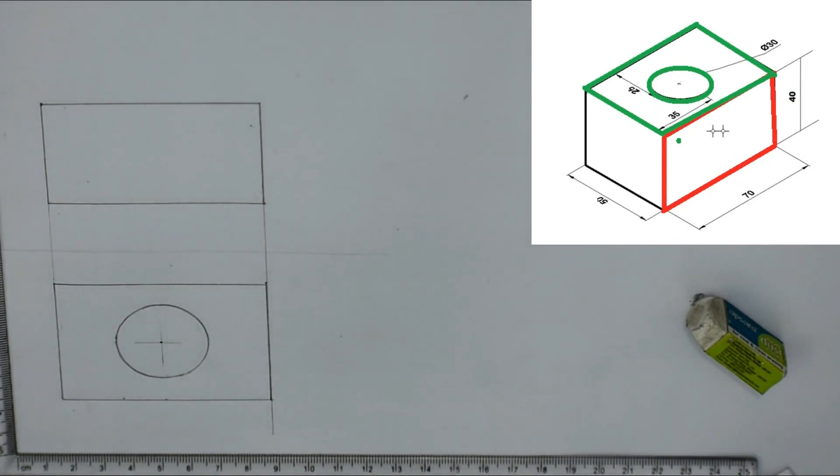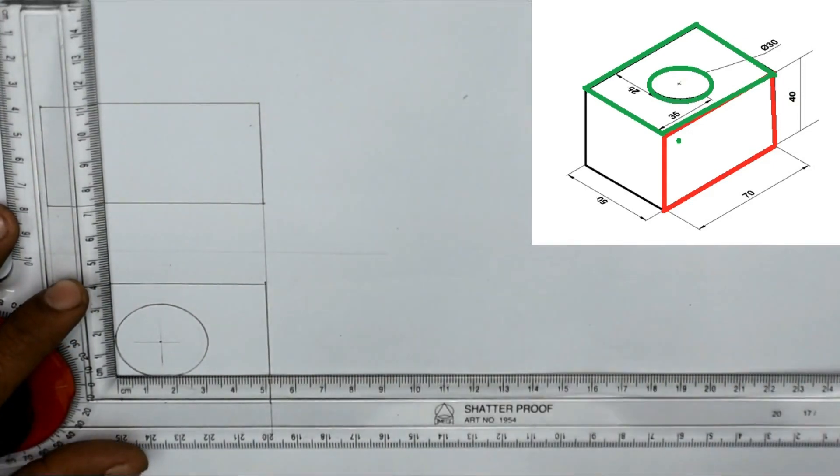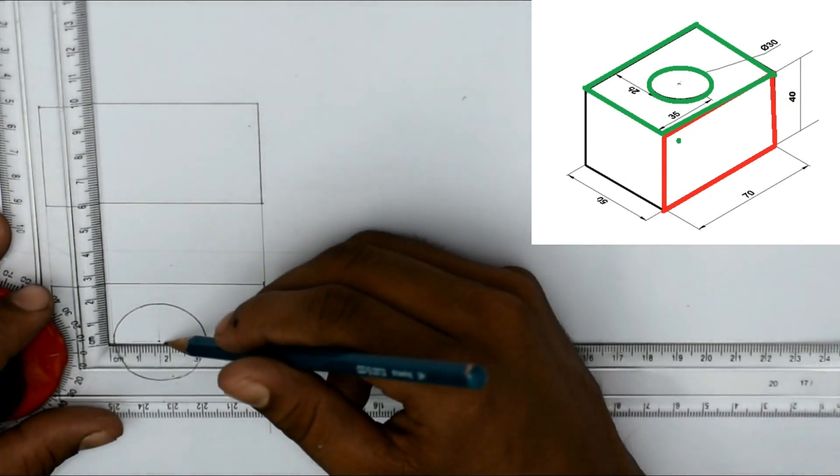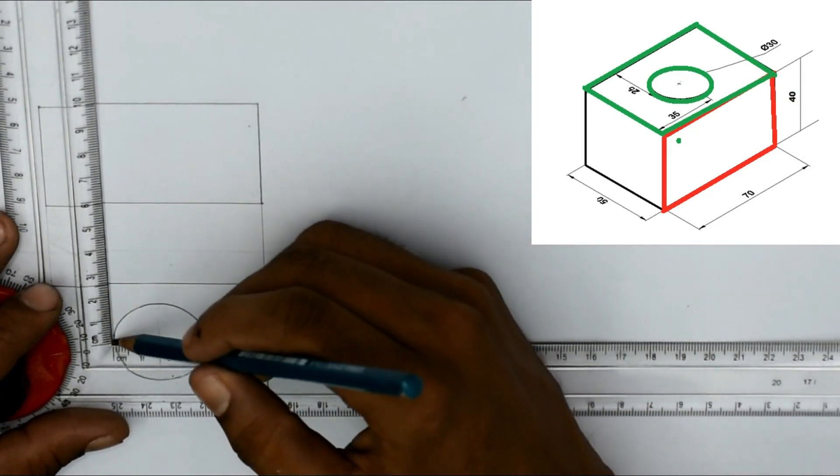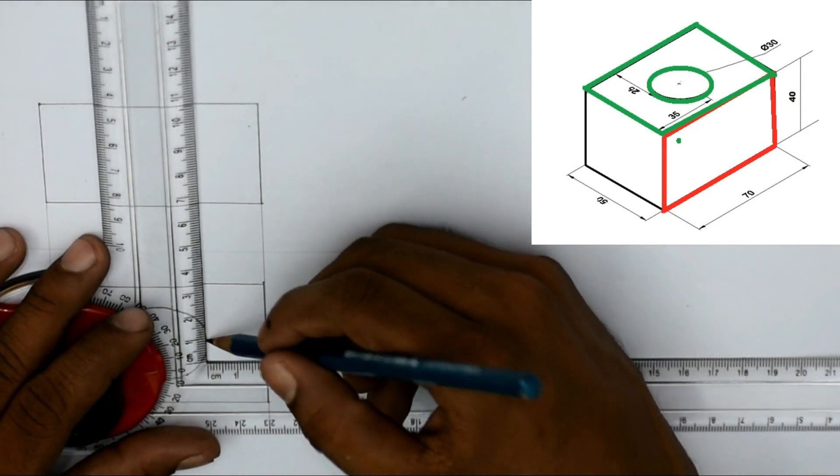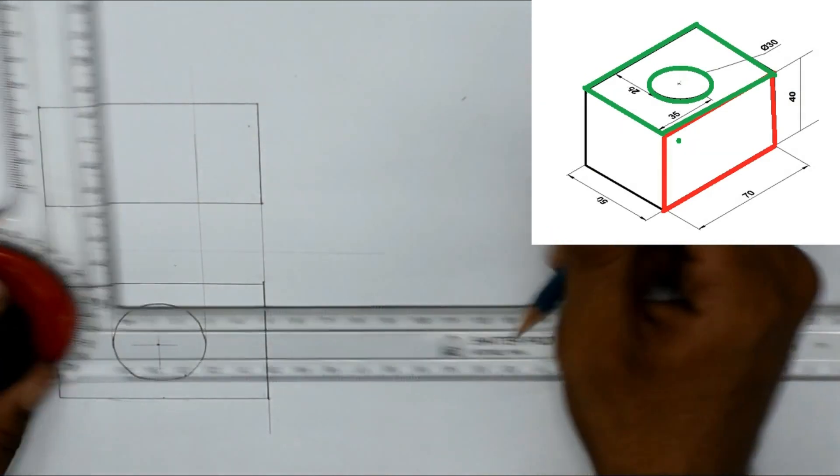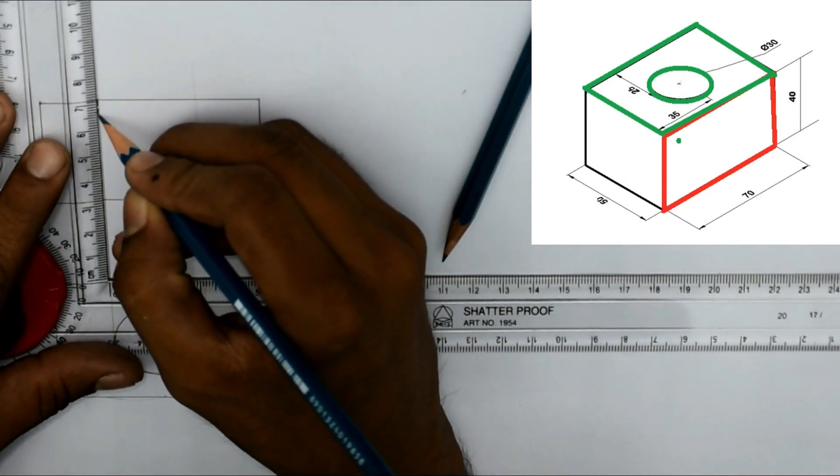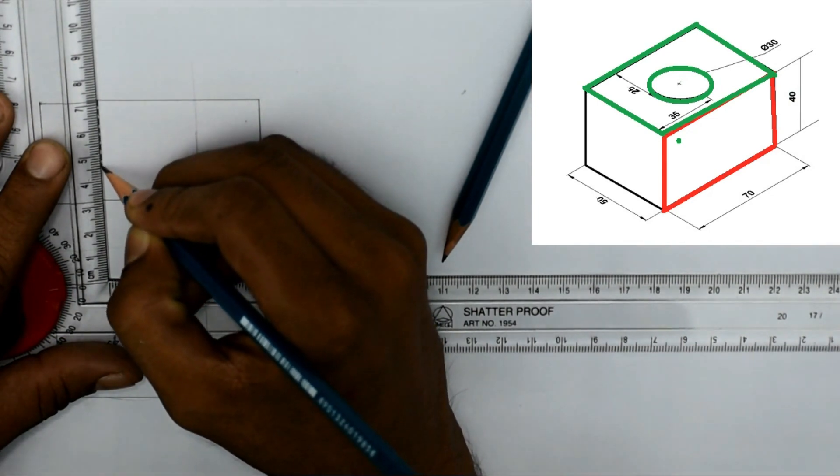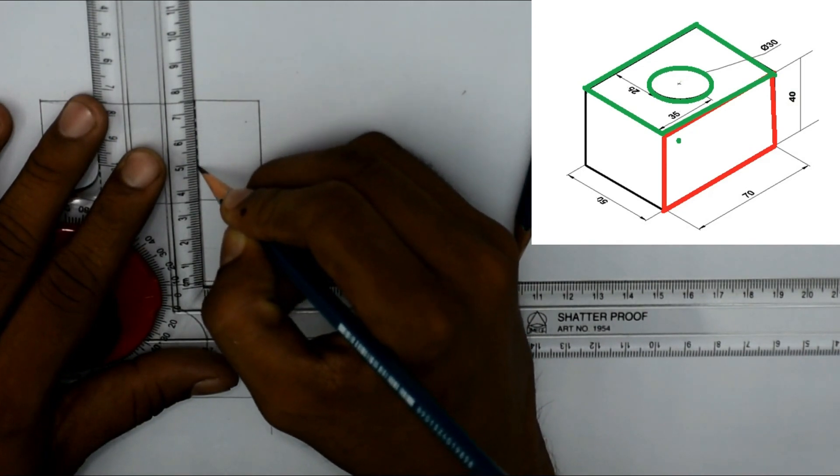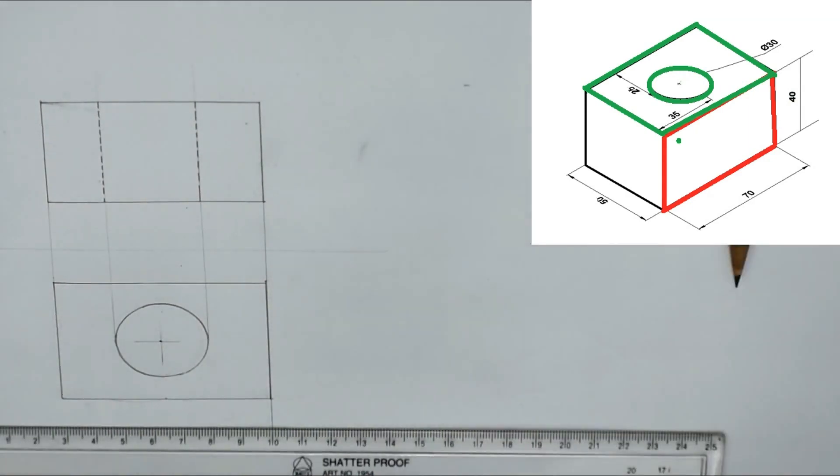Now when coming back to our front view, I have said earlier that there will be dotted lines because of this hole. So the distance of that hole we can get by projecting this line again upwards. So you have to see here that I am first matching with the axis line, then I am projecting it from the center. Again, so I just need to draw this. These are also called dashed lines. Now our front view and top view is completed.